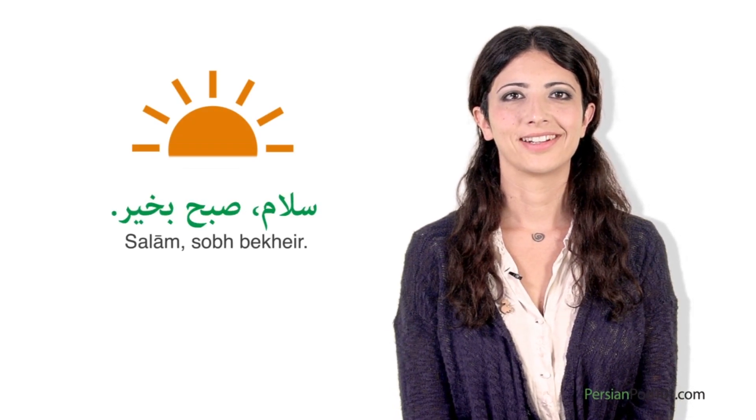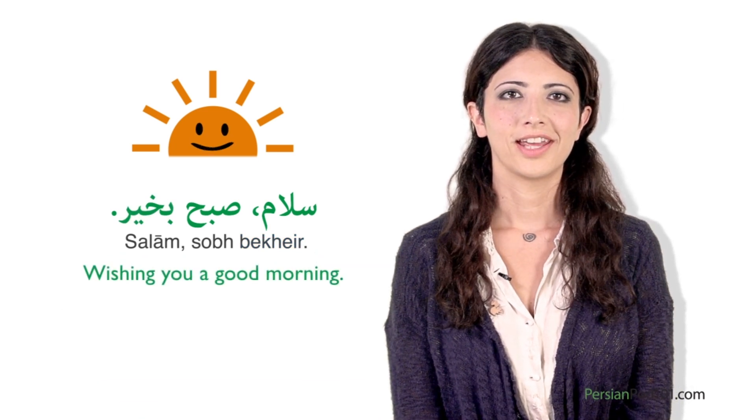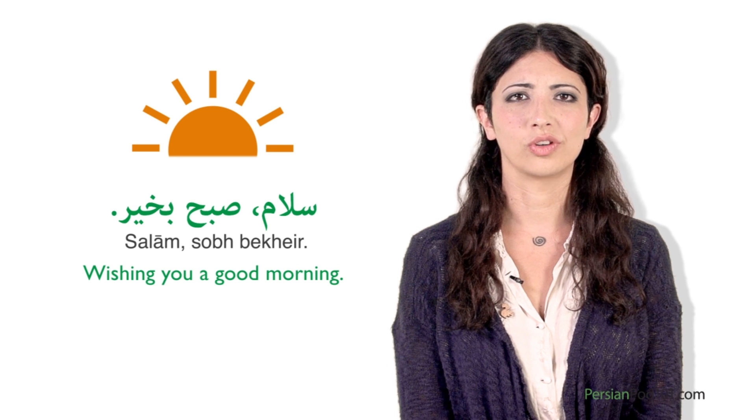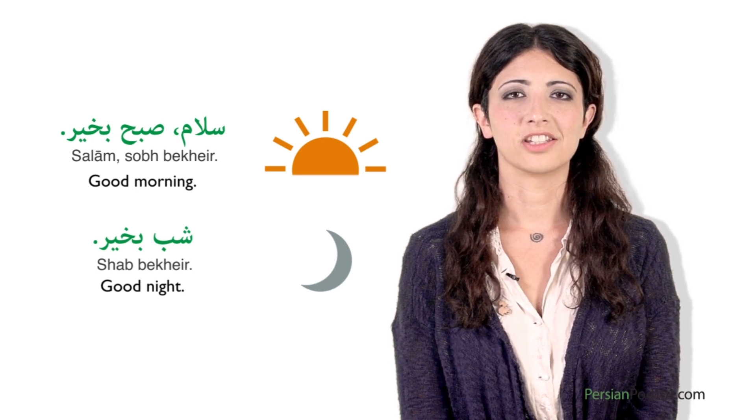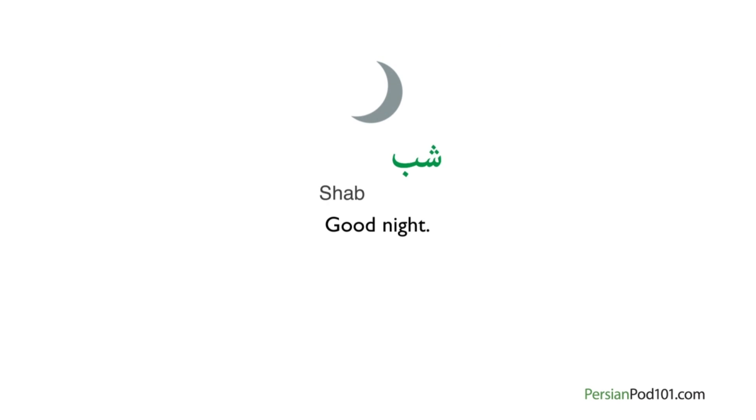Salam literally means hello. We use other phrases too, but we always add salam at the start of a greeting. In the morning, we say 'Salam, sob bekhayr.' 'Sob' is Persian for morning and 'bekhayr' means to be good, so it really means wishing you a good morning. In Persian, we don't say good afternoon or good evening very much. Good morning and good night are used more often. During the rest of the day, the most common greeting is just salam.